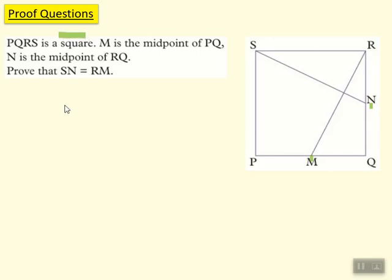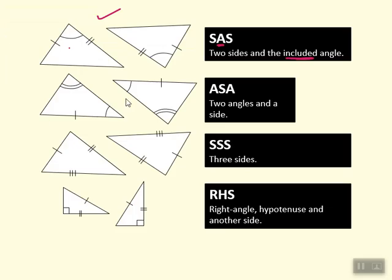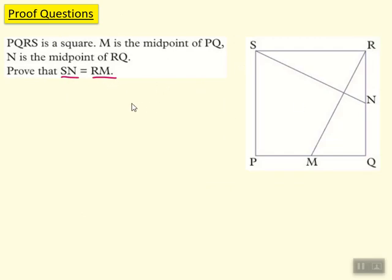We need to prove that SN — the length from S to N — is the same as RM. We're not going to use Pythagoras, SOHCAHTOA, cosine rule, or sine rule. What I love about congruence is it's just basic arguments, little sentences. We're going to use one of our congruence rules as the argument to show why SN is the same length as RM.